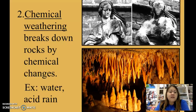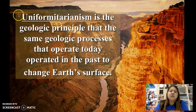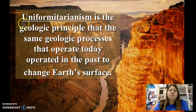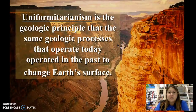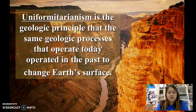Uniformitarianism is a big science word but not difficult to understand. It is the geologic principle that says the processes that shaped our surface in the past continue to shape our surface today. This includes processes like weathering, erosion, deposition, abrasion, volcanic activity, and plate tectonics — the stuff that happened in the past still happens now.